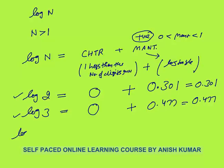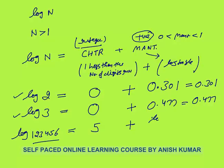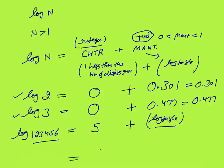Another example: log of a 6-digit number like 123456. How many digits? 6 digits. So characteristics will be 5. Characteristic is always an integer — one less than the number of digits. For a 6-digit number, characteristics = 5. Mantissa you check from the log table.